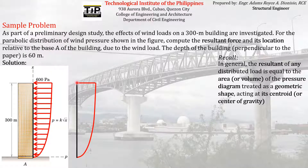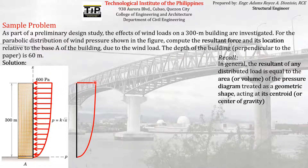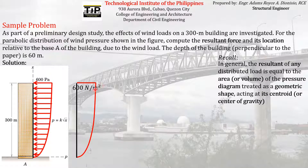So our goal is to find the area of this shape. The dimensions of this area come from the pressure diagram. The width corresponds to the pressure at the top of the building, which is 600 pascals (or 600 N/m²), and the height dimension is 300 meters — the full height of the building.